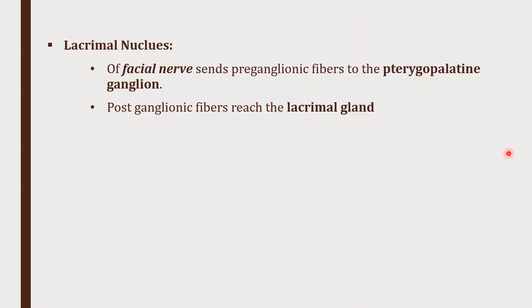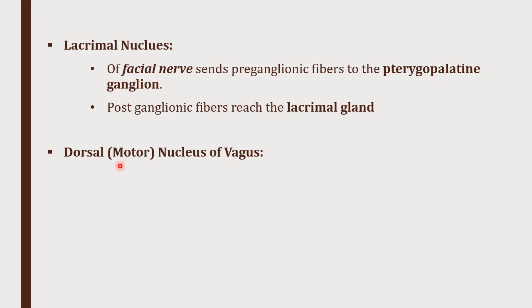The next and most important nucleus of the parasympathetic system is the dorsal motor nucleus of the vagus, also simply called the dorsal nucleus of the vagus.